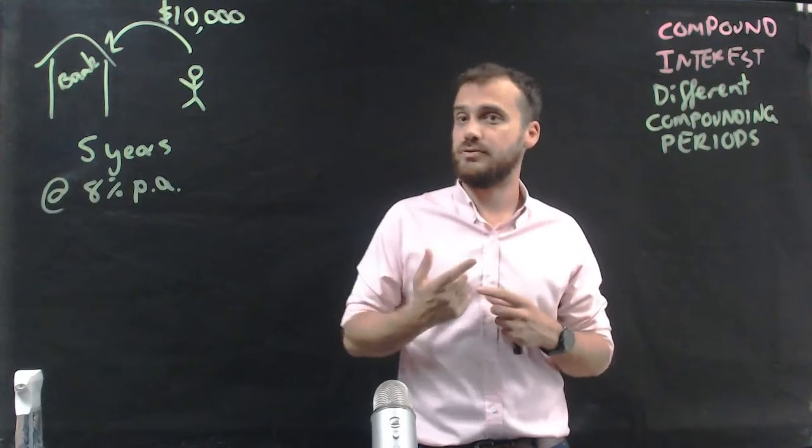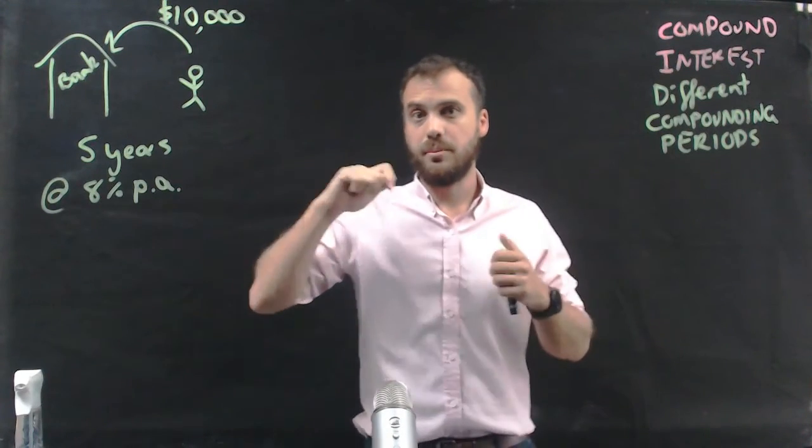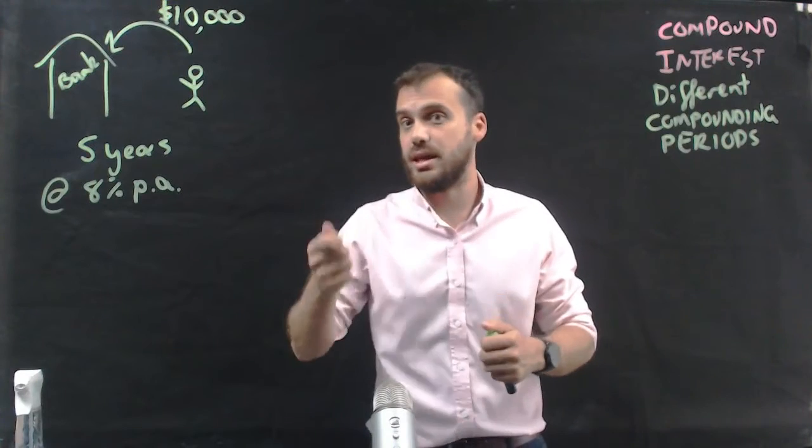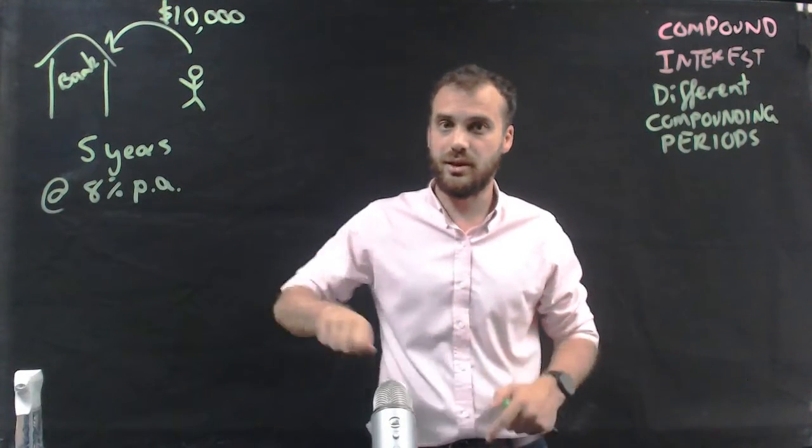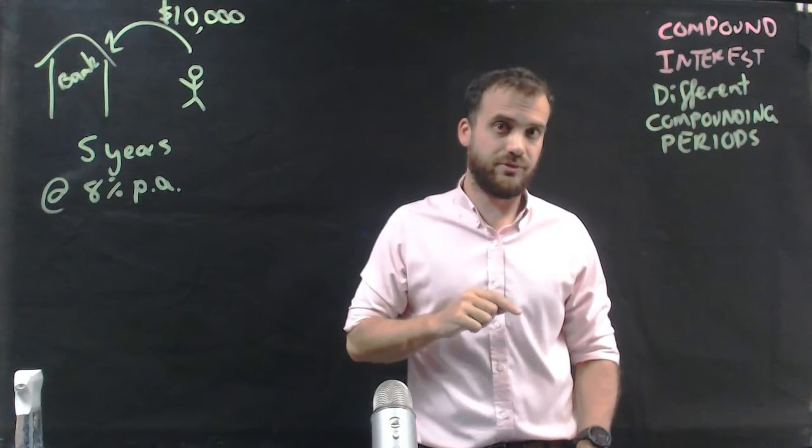You'll remember from past videos that 8% per annum meant getting 8% per year paid at the end of the year. You wait one year and the bank pays interest. But that's not always the case. Let's look at a different situation.